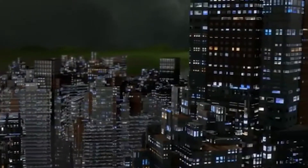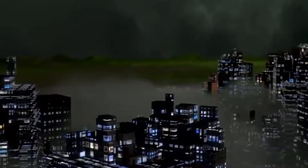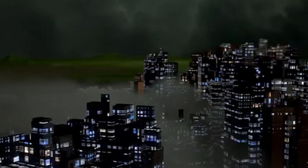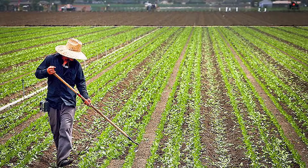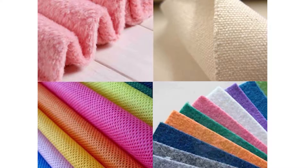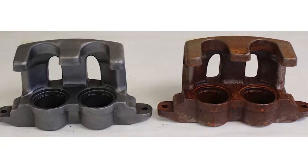Acid rain containing H2SO4 affects buildings as well. Carbonate rocks used in buildings dissolve due to acid rain, and iron rusts because of the acid rain. Although sulfuric acid has very harmful effects on the environment, it is a very important acid used in many industries. It is used in the manufacture of fertilizers, detergents, paints, pigments, dyes, and synthetic fibers. It is also used in car batteries, tanning leather, and cleaning metal surfaces, which is called pickling.